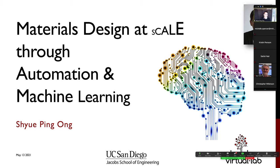Today I'll be talking about materials design at scale through automation and machine learning. I'm a professor at UC San Diego, and my lab is called the Materials Virtual Lab. We are a pure computational materials lab focusing on applying first-principles calculations and machine learning to develop new materials.